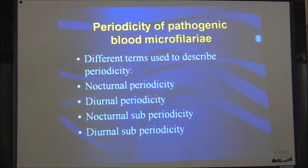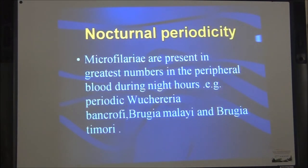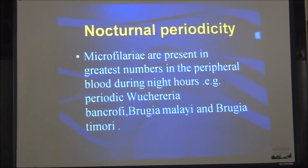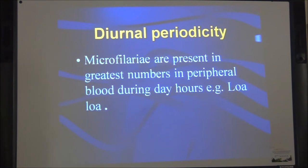There are certain terms used to describe periodicity: nocturnal periodicity, diurnal periodicity, nocturnal sub-periodicity, and diurnal sub-periodicity. Nocturnal periodicity is when microfilaria are present in greatest numbers in the peripheral blood during night hours — for example, in W. bancrofti, Brugia malayi, and Brugia timori.